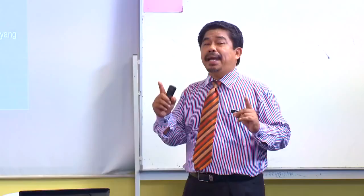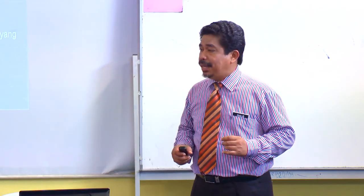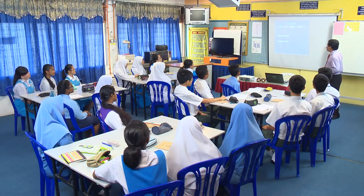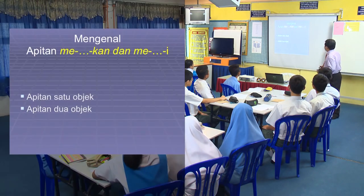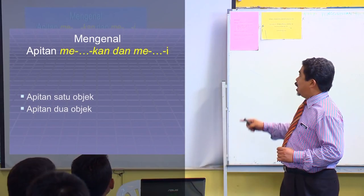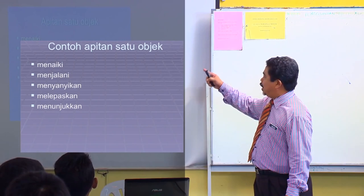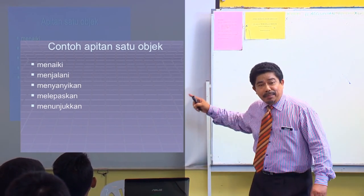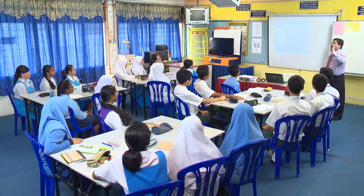Kamu perlu mengetahui apitan yang terdapat dalam bahasa Melayu. Sebenarnya dalam bahasa Melayu terdapat dua jenis apitan: apitan me-i yang satu objek, dan apitan me-i yang dua objek. Contoh apitan satu objek: menaiki, menjalani, menyanyikan, melepaskan dan menunjukkan.